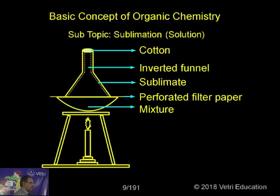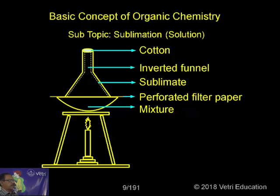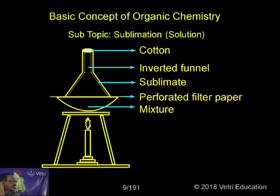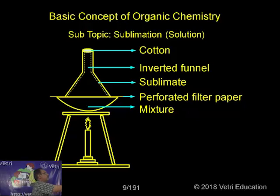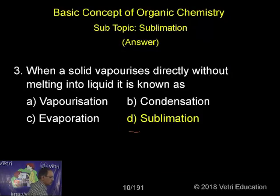This is the apparatus we use for sublimation. You take a china dish and place the substance in it, then take a beaker filled with cotton tightly and invert it over the china dish like a filter. The perforated filter funnel keeps the funnel cool and prevents impurities from escaping from the china dish. The solid vapors penetrate through and will sublime onto the funnel, which can be collected later.